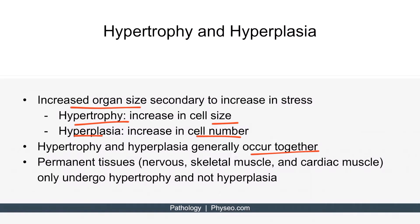One extremely high-yield point to keep in mind is that permanent tissues only undergo hypertrophy and not hyperplasia. This is because permanent cells cannot divide as they lack stem cells. Remember, permanent cells include neurons, skeletal muscle myocytes, and cardiomyocytes. Therefore, since permanent tissues are innately unable to undergo hyperplasia, any growth is automatically hypertrophy.